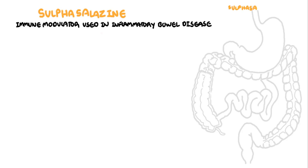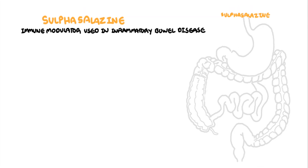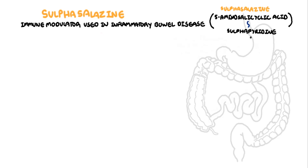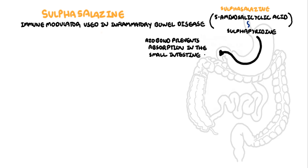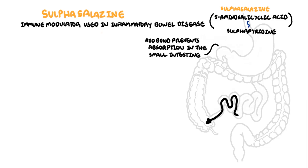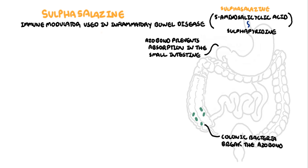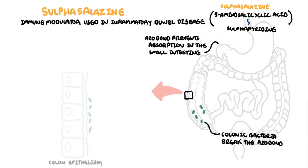Sulfasalazine is a prodrug composed of 5-amino salicylic acid linked to sulfapyridine through an azo-bond. This linkage minimizes absorption of the drug in the upper gastrointestinal tract. In the colon, however, bacteria break the azo-bond and free both sulfapyridine and 5-amino salicylic acid.